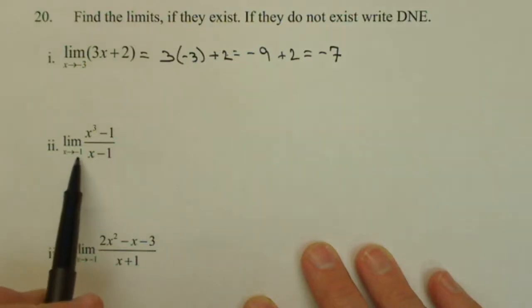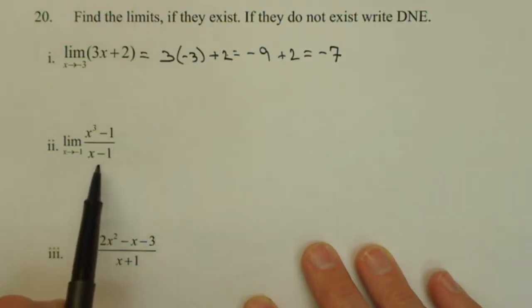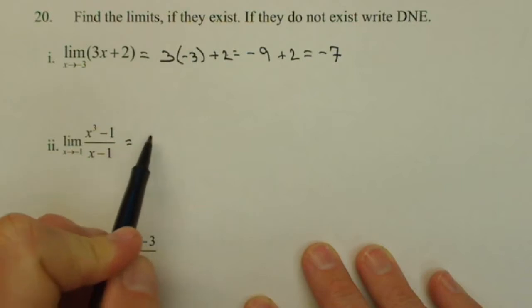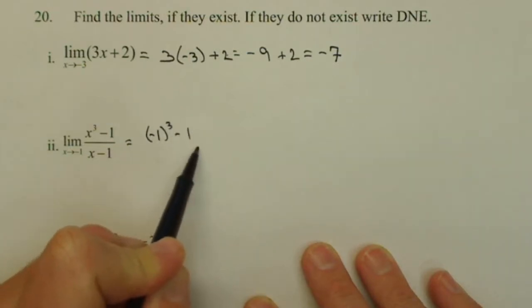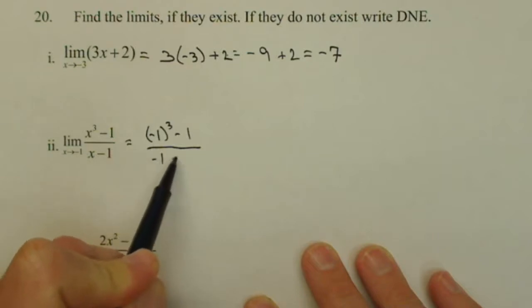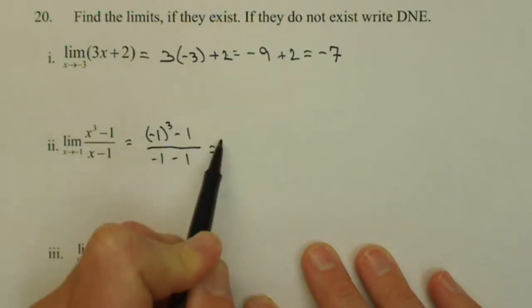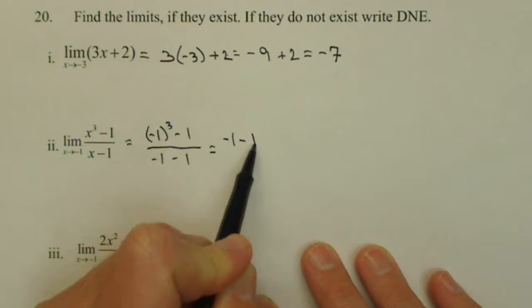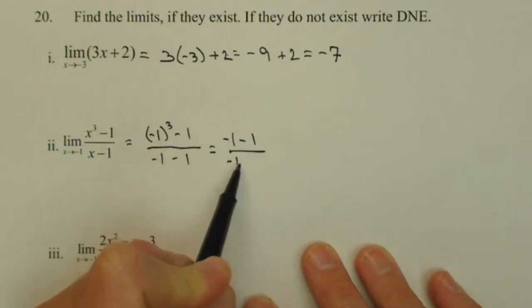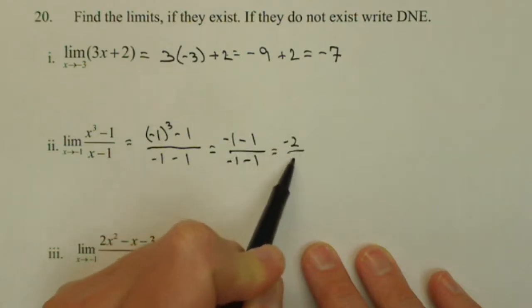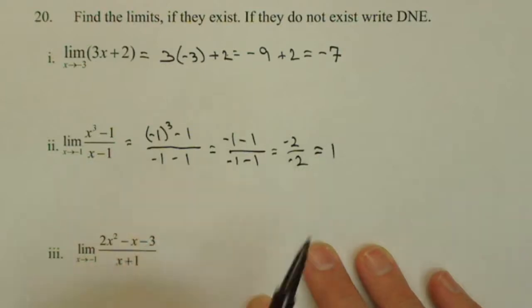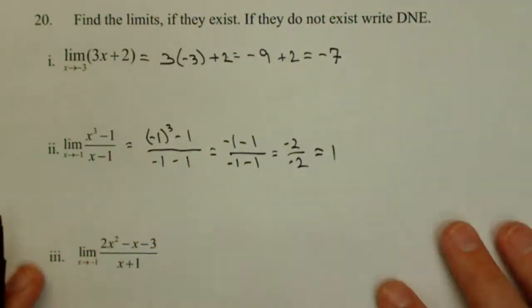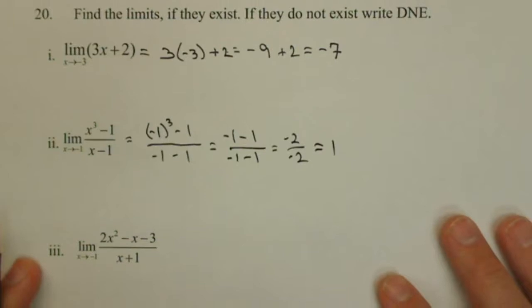Number 2, limit as x approaches negative 1 of x cubed minus 1 over x minus 1. Plugging in negative 1, we have negative 1 cubed minus 1 over negative 1 minus 1. Negative 1 cubed is negative 1 minus 1 over negative 1 minus 1, so we get negative 2 over negative 2 or 1. So that's always the first step towards solving any limit.